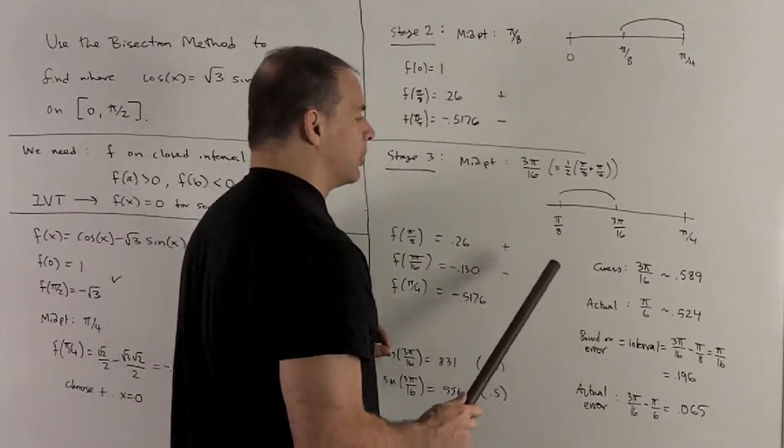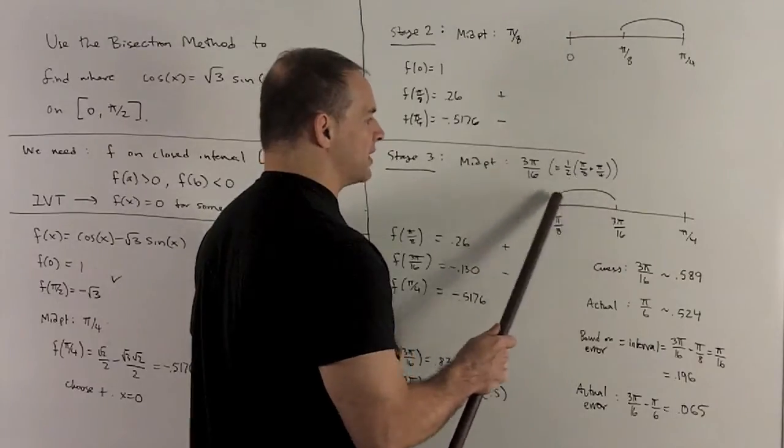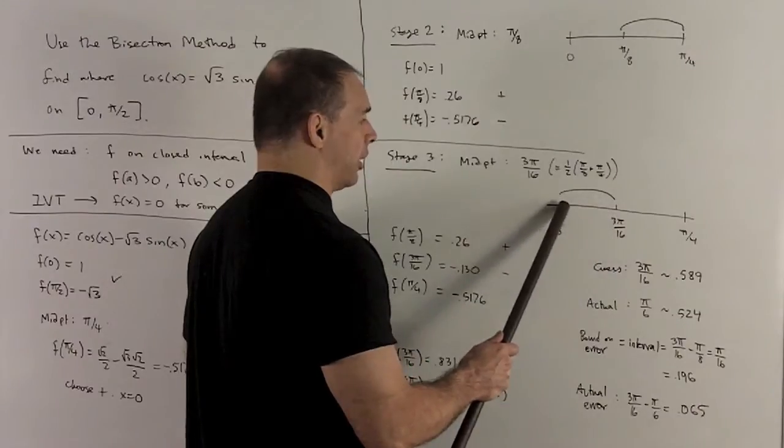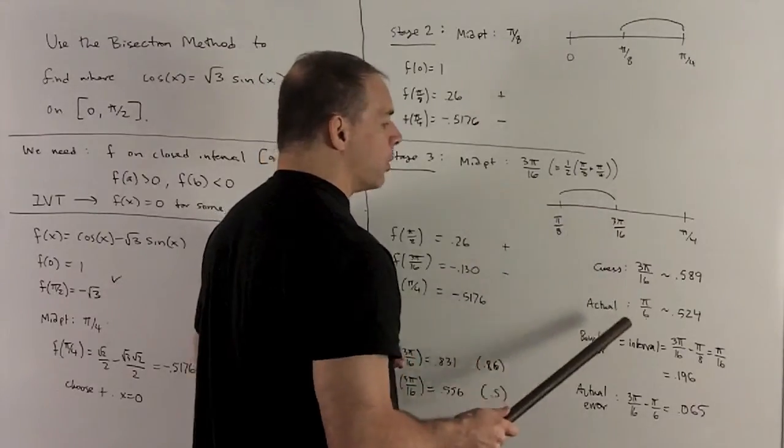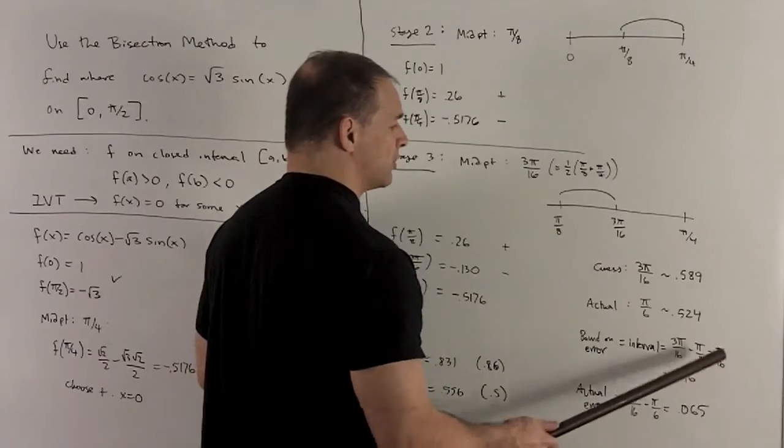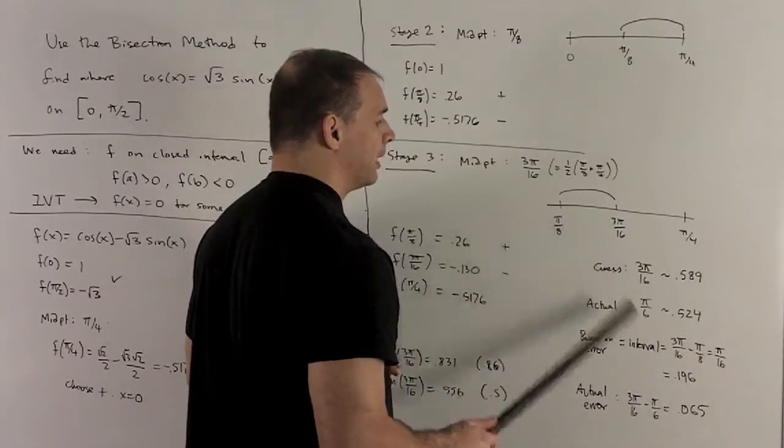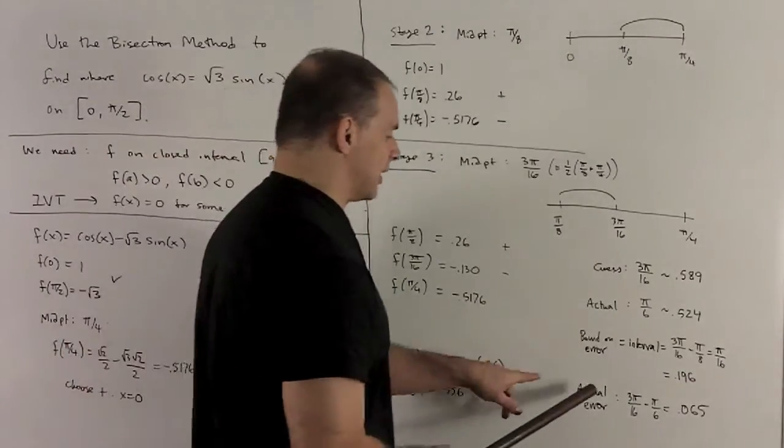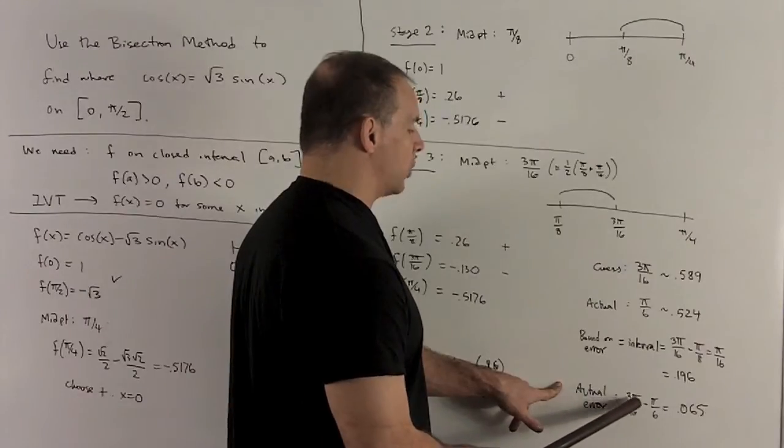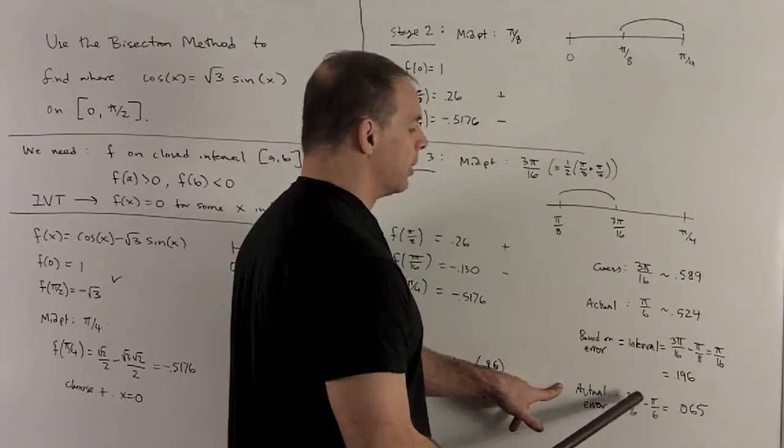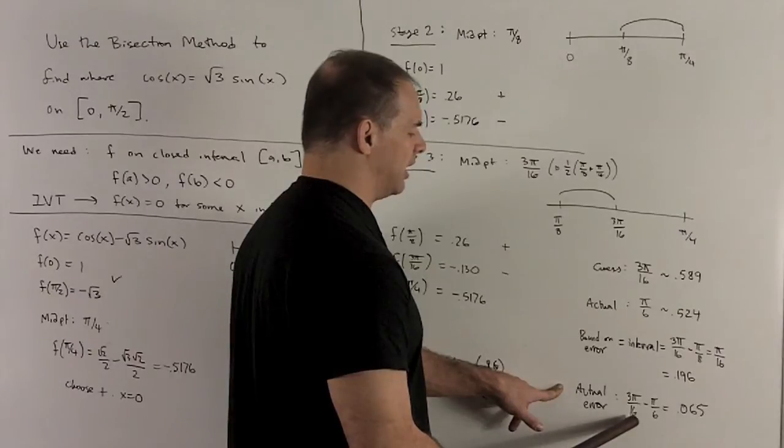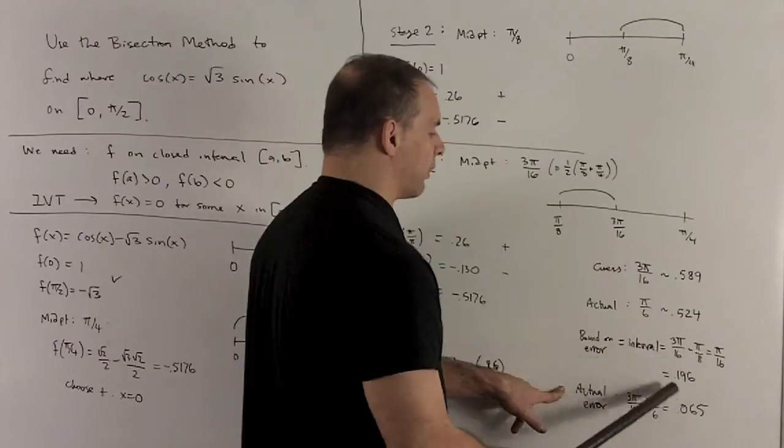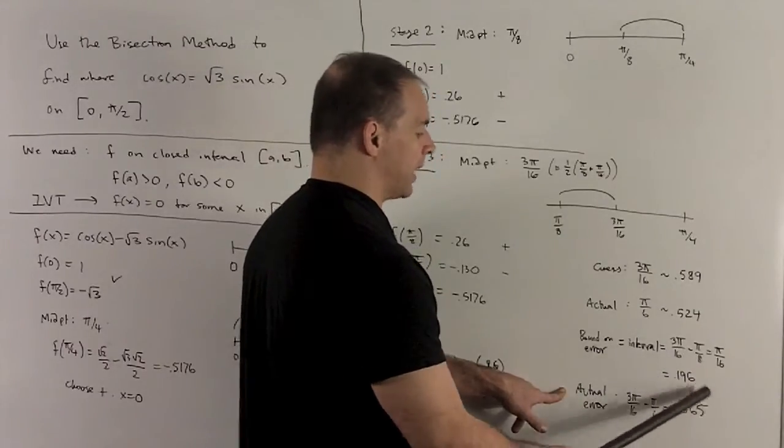What else can we get? We also have a bound on the error. Because I know the actual point lives inside this interval somewhere, the worst that my guess can be is the length of the entire interval. So our error is going to be at most 3π/16 minus π/8, which gives me π/16. That's roughly 0.196. Our actual error, let's take the difference. So that's going to be the difference in the actual answer, which is π/6 minus our guess, which is 3π/16. That gives me 0.065. So we see that our actual error lives inside of our bound for the error. So that's good.